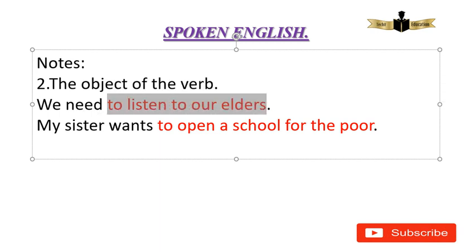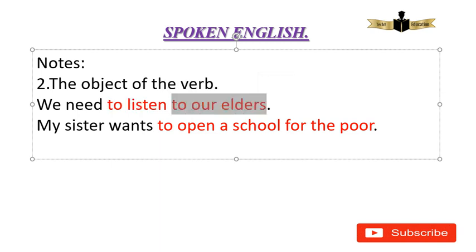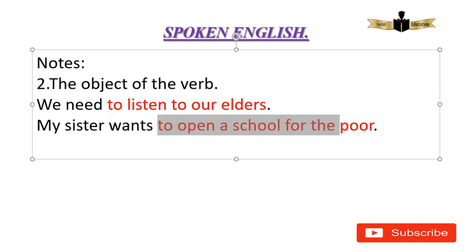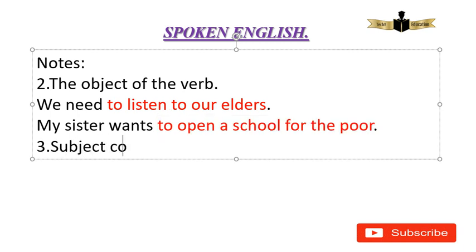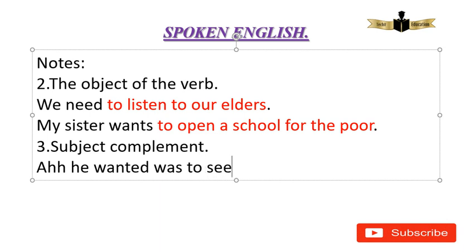But this is a detail we will explain in the next class. 'To listen' is the infinitive verb, forming the infinitive phrase, which is the object. The next function is subject complement. What does the verb mean? How does a linking verb work? We will look at that now.